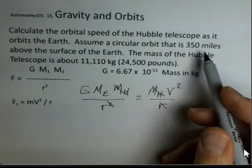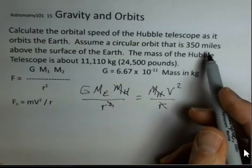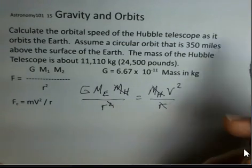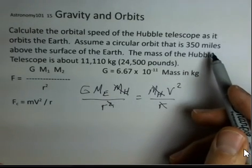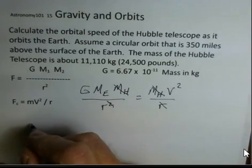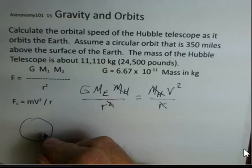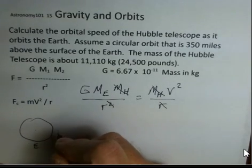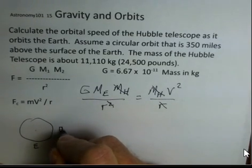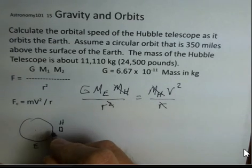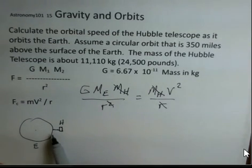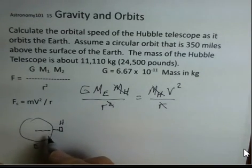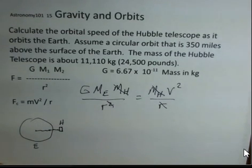But first, we need to investigate this 350 miles. Is this equal to R if I convert it to meters? Should this be used for R? Well, if we have the Earth here, and this is not to scale, and we have the Hubble telescope out here, 350 meters, that's our height above the surface of the Earth. So we need the total distance to the center of the Earth.